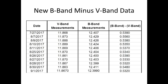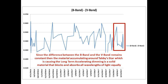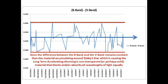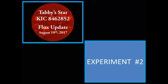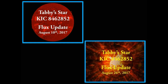So let's look at the new data to add to what we already have. These measurements were taken by David Lane from July 27th to the present. Adding them to the previous graph, we have the curve highlighted in the red box. This new data is consistent with the older data and remains bound within the two parallel lines. Therefore, we can say that the difference between the B-band and the V-band is remaining constant, and we can still maintain that the material accumulating around Tabby's Star and causing the long-term dimming is non-transparent.